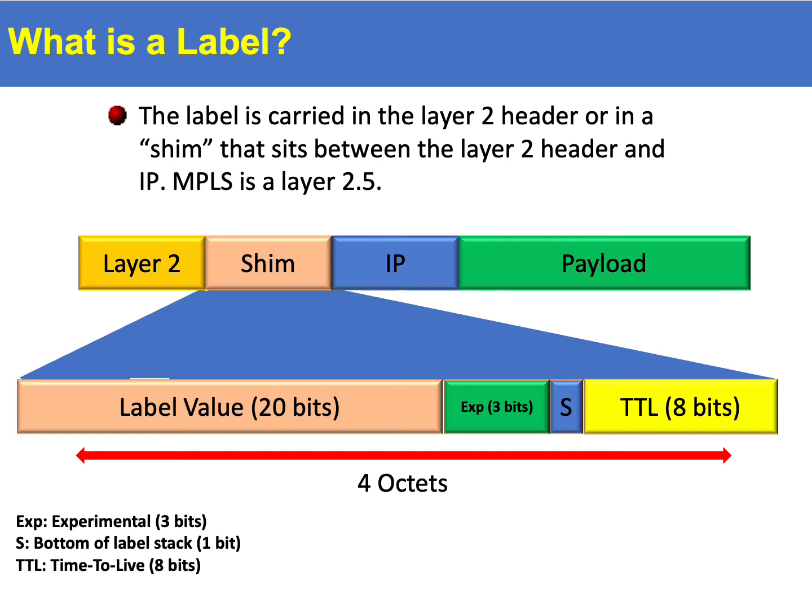A number of different protocols are used to set up these labels. Two of the most popular are LDP, the label distribution protocol, and RSVP-TE, the resource reservation protocol with traffic engineering. Labels may also be manually configured by the network operator.